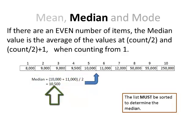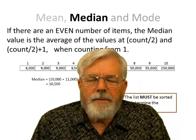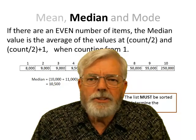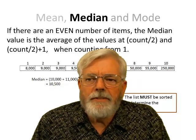That means for 10,500, half the values are below that and half the values are above that. Again, we have to have a sorted list to determine the median value.